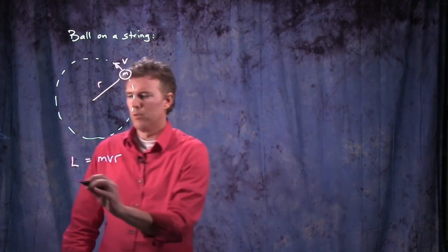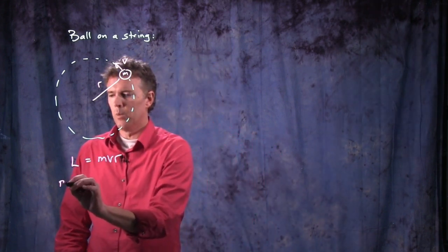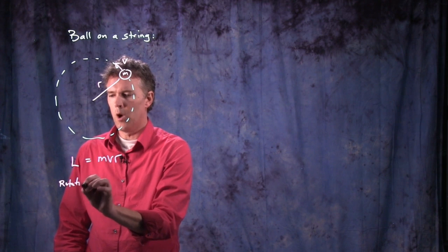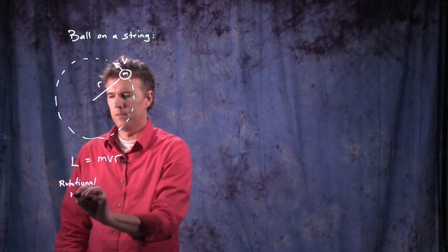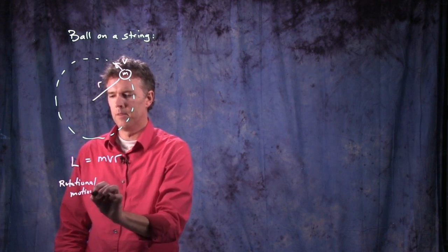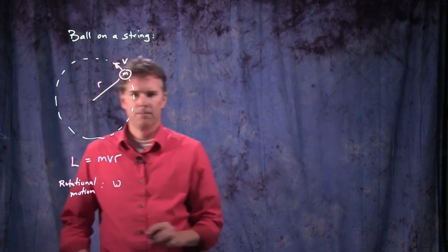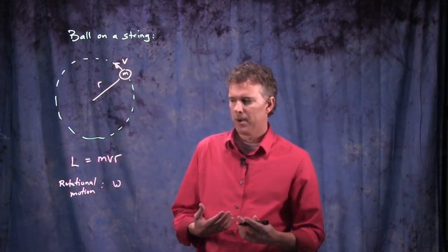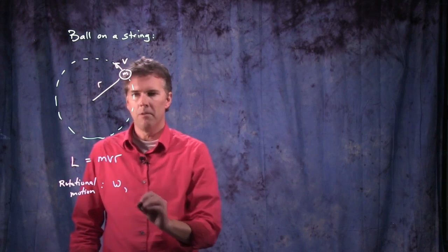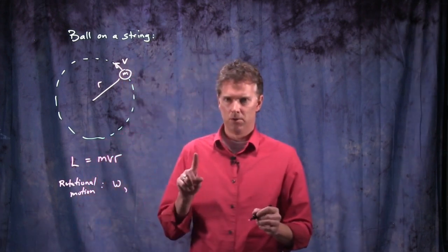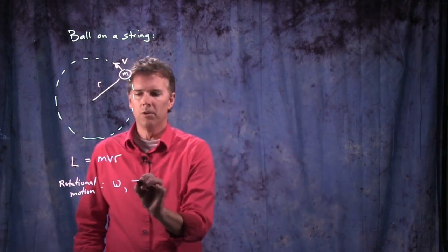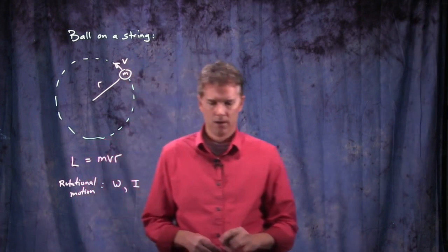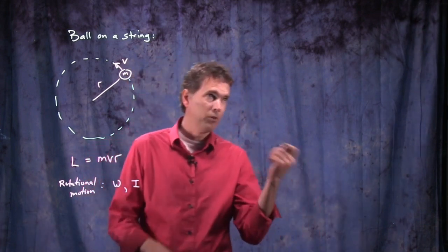One of the things that we know for rotational motion is we like to use omega instead of v. The other thing that we talked about is instead of mass in rotational motion we should really use moment of inertia, I. So how do these two things tie together?